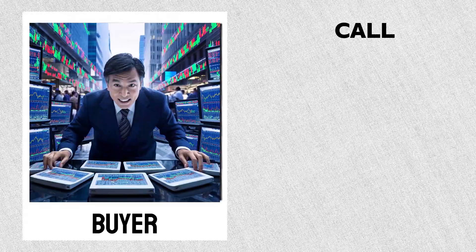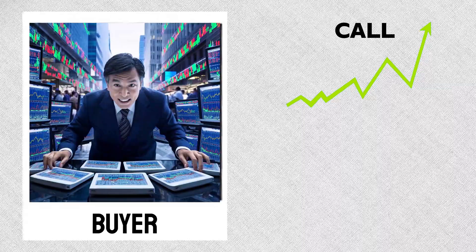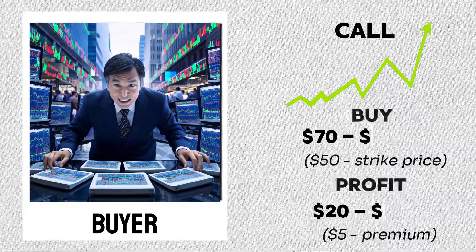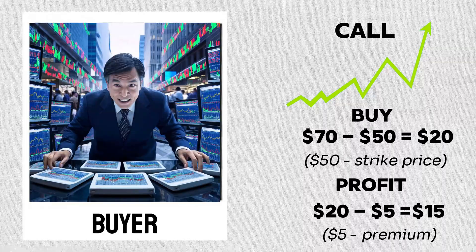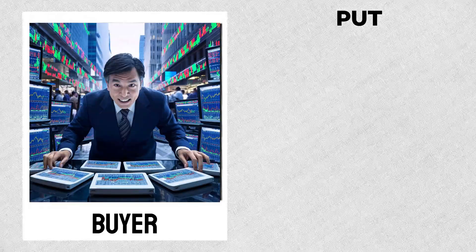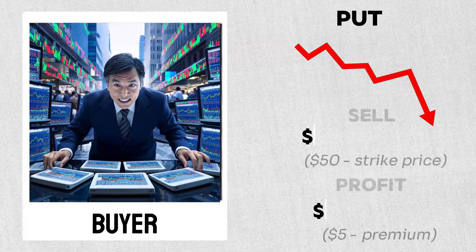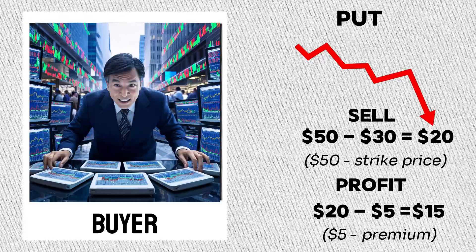Investors buy call options when they think the asset's price will rise, allowing them to profit from the upside move by exercising their option. On the other hand, they buy put options when they expect the price to fall, letting them sell at the strike price and make money from the downturn.